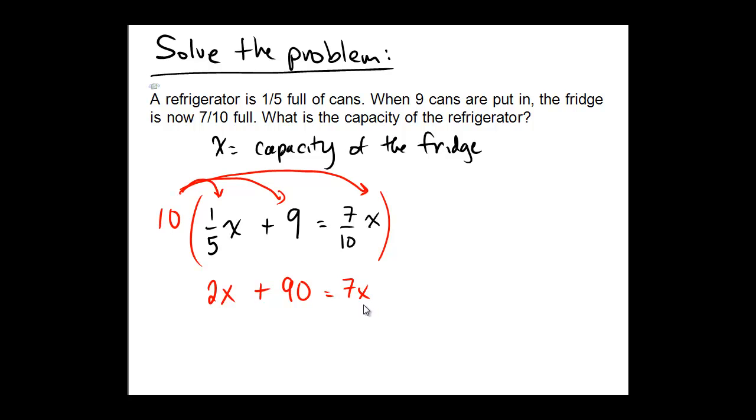Now, let's isolate the variable, unwrap our present. So we're going to subtract two x from both sides to collect all of the x's together. On the right, seven x minus two x would be five x.